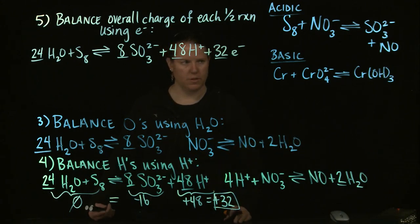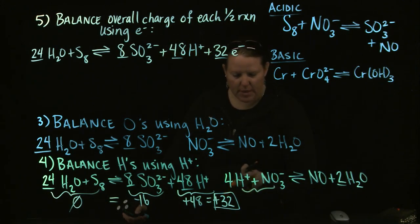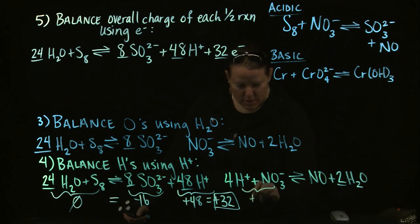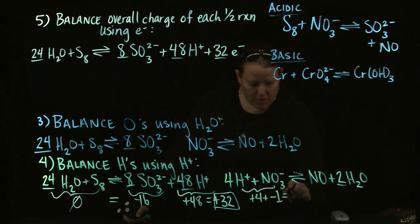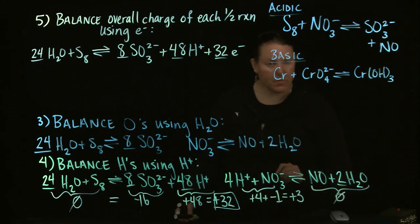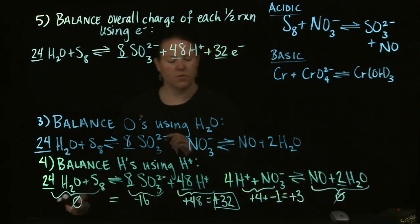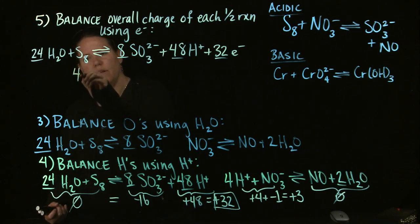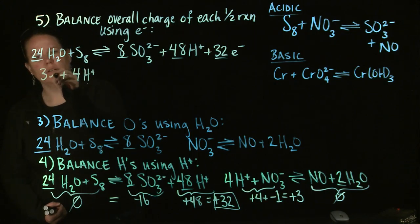Now let's do the same for the nitrogen half reaction. On this one, I have 4 × (+1) plus 1 × (−1), which gives me an overall charge of +3. And on the other side there's no charge at all. So I need to add 3 electrons to the more positive side — the reactant side.